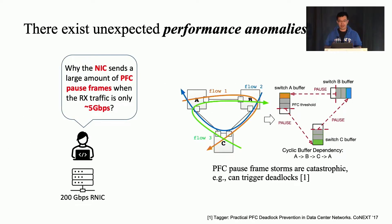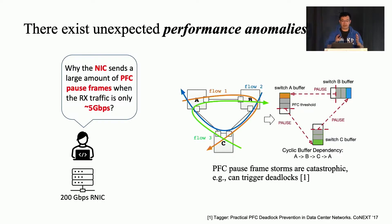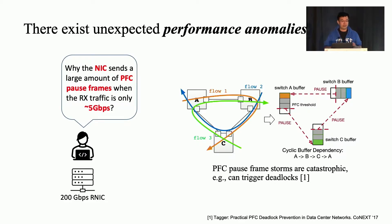However, our experience shows that there exist some unexpected performance anomalies when using RDMA. For example, an application with a particular traffic pattern can cause RDMA to send a lot of PFC pause frames even when the network traffic is only 5 Gbps and there is no network congestion. PFC is a prevalent technique to ensure lossless for Ethernet-based RDMA networks, and pause frames are usually generated only when there is severe network congestion.